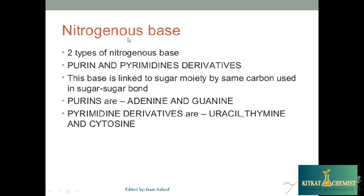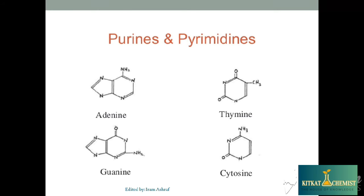For nitrogenous bases, there are two types: Purines and Pyrimidines. Purines are double-membered ringed structures and Pyrimidines are single-membered ringed structures. The base is linked to the sugar via a glycosidic bond.